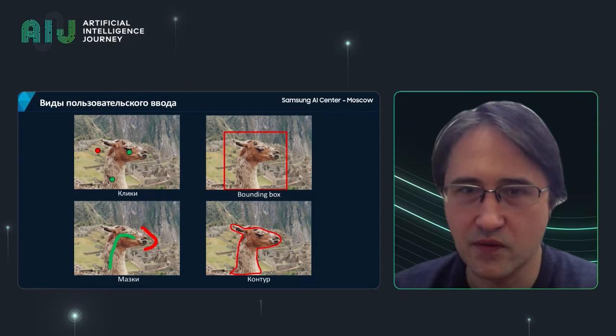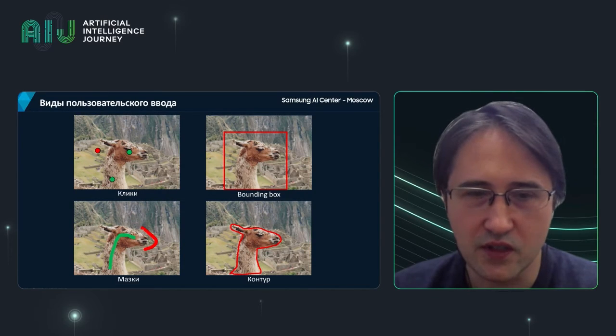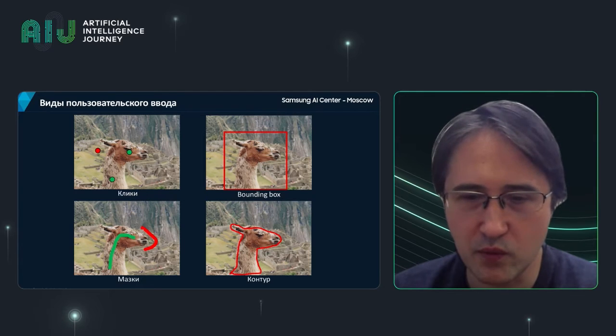Good afternoon. Today I'm going to talk about neural networks in interactive instance segmentation. The main purpose behind interactive instance segmentation is to segment an object in an image that the user wants to get, and he will identify that to the system.